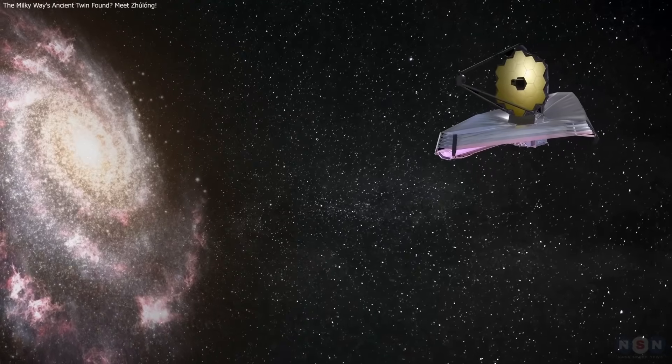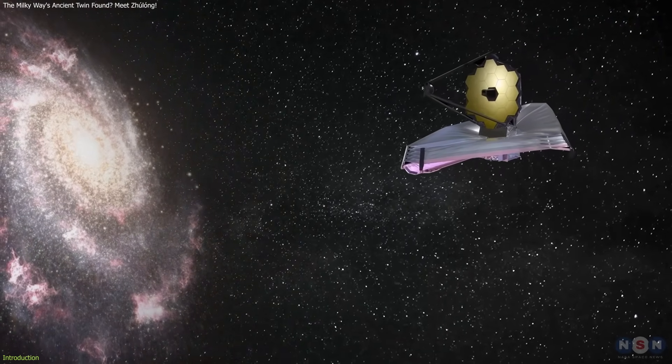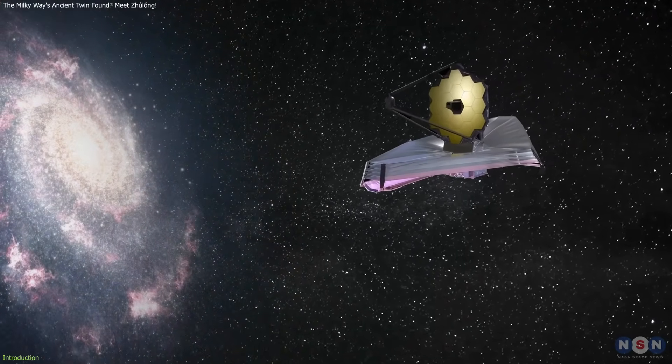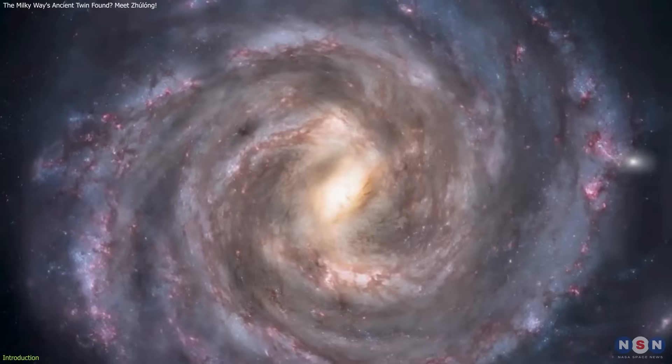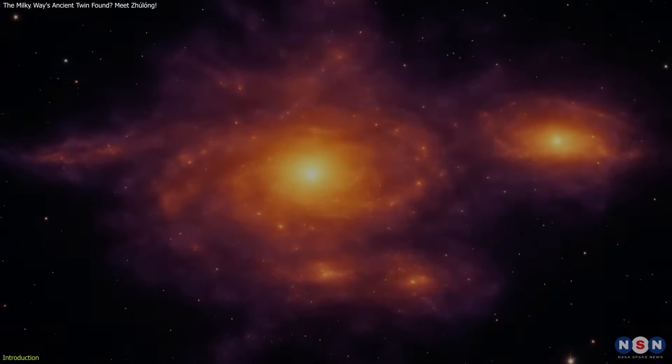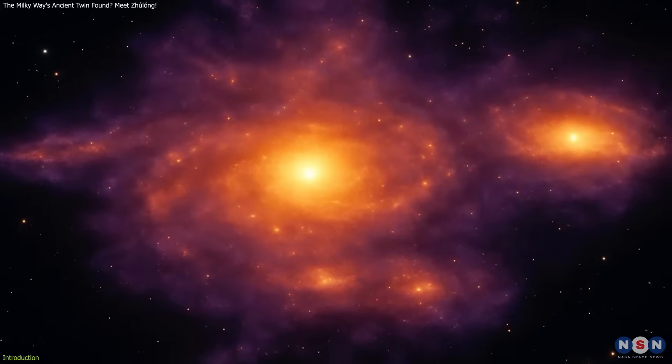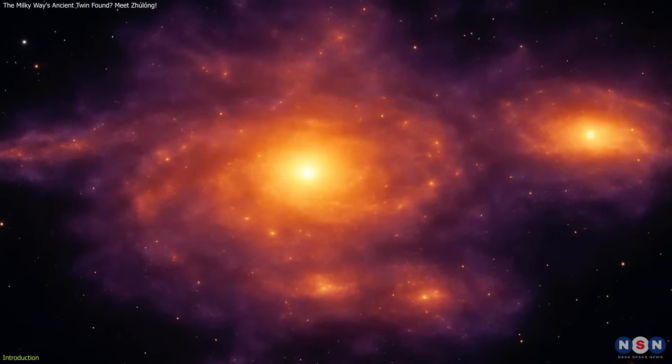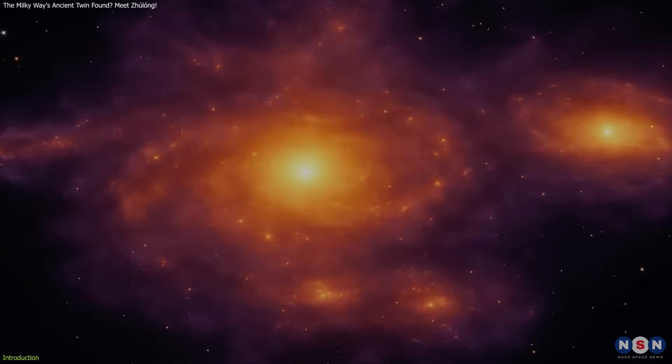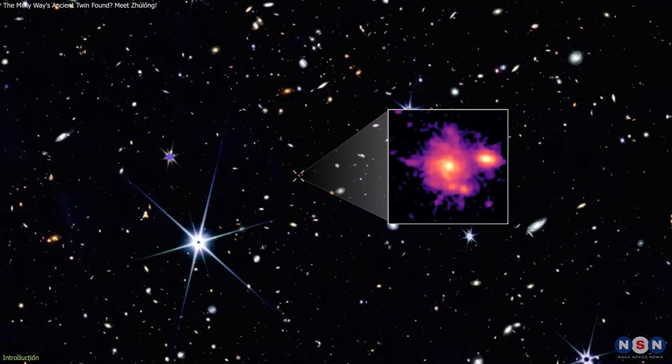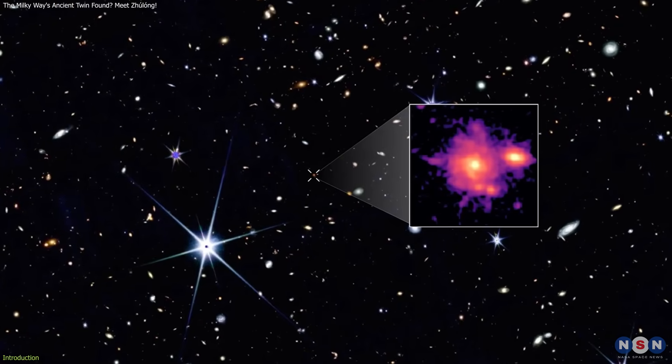The James Webb Space Telescope discovered a galaxy named Zhulong. This isn't just any distant galaxy, it's a near-twin of our Milky Way, complete with swirling spiral arms, a central bulge, and a massive disk of stars. And yet, it existed when the universe was barely one billion years old.